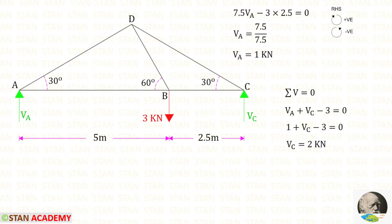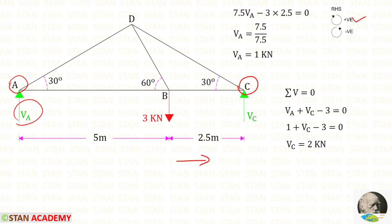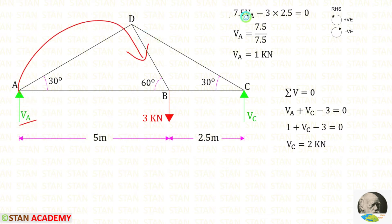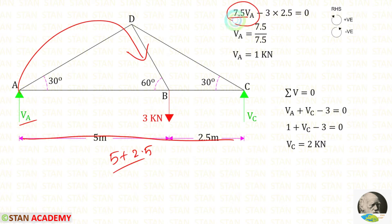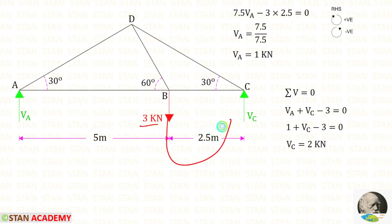Now let us find the vertical reactions. At point A we have to find the vertical reaction VA. For that I am going to take moments about C, moving towards the right-hand side, where clockwise is positive and anti-clockwise is negative. VA is acting clockwise, so it is positive, and the distance is 5 plus 2.5, so 7.5. The load is acting anti-clockwise, so it is negative, and the distance is 2.5 — so minus 3 into 2.5. Finally for VA, we get 1 kilo Newton.